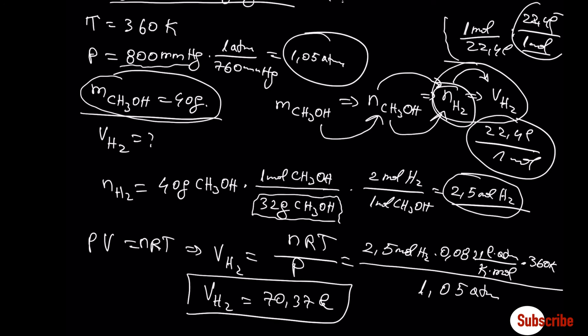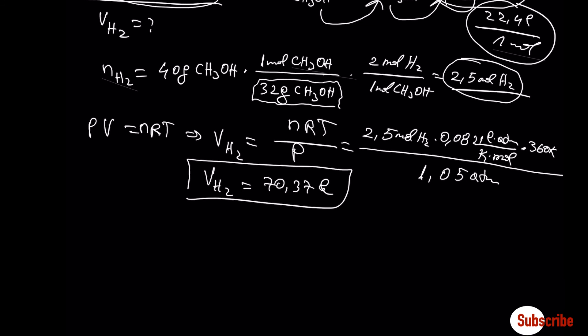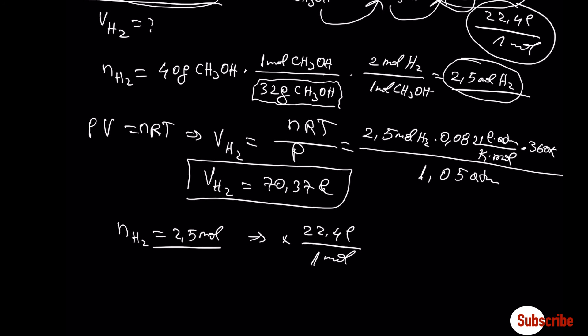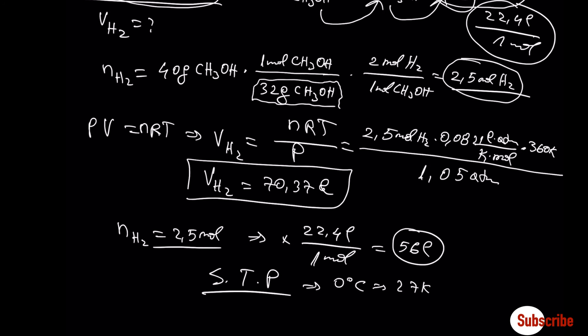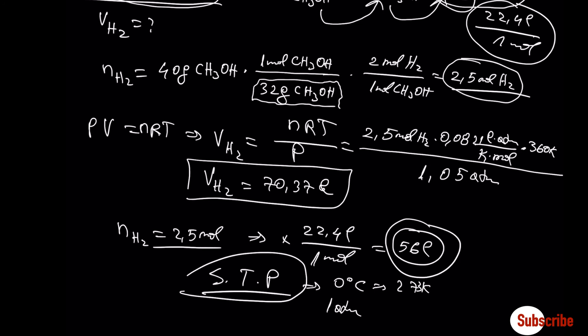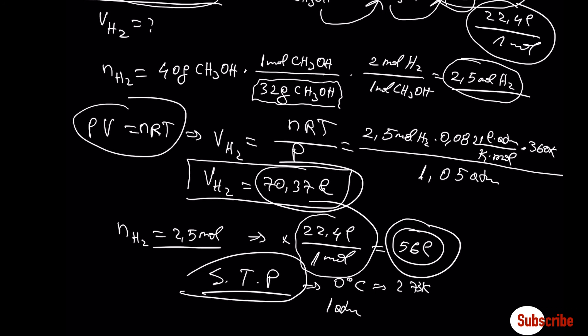Now consider the case where you are at standard temperature and pressure. With 2.5 moles of hydrogen, multiply by 22.4 L per 1 mol to get 56 liters. So at standard temperature and pressure (0°C or 273 K, and 1 atm) you produce 56 liters, whereas under the conditions in the previous example you produce 70.32 liters. To summarize: if you are at STP, use the 22.4 L/mol relation; if you are at any other condition, use the ideal gas law PV = nRT and run the calculations.